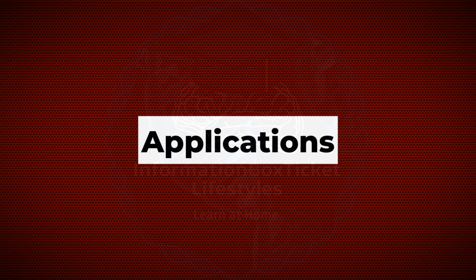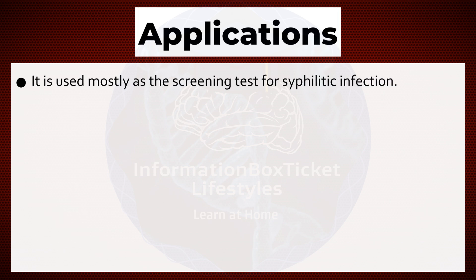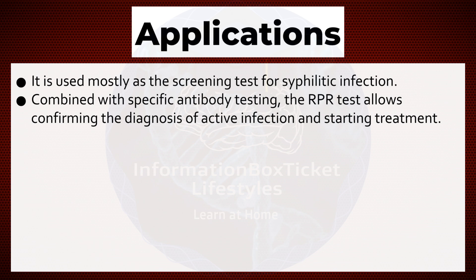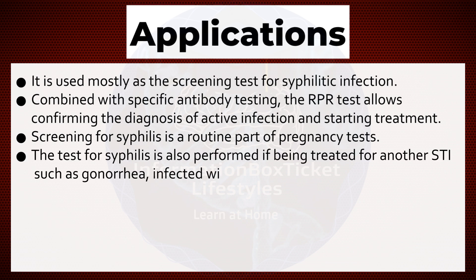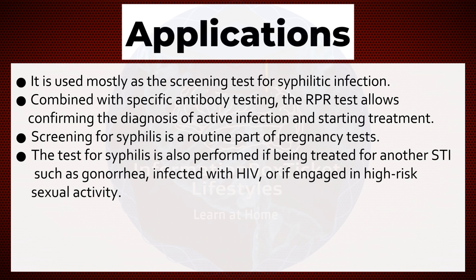Applications of Rapid Plasma Reagin Test. It is used mostly as the screening test for syphilitic infection. Combined with specific antibody testing, the RPR test allows confirming the diagnosis of active infection and starting treatment. Screening for syphilis is a routine part of pregnancy tests. The test is also performed if being treated for another STI such as gonorrhea, if infected with HIV, or if engaged in high-risk sexual activity.